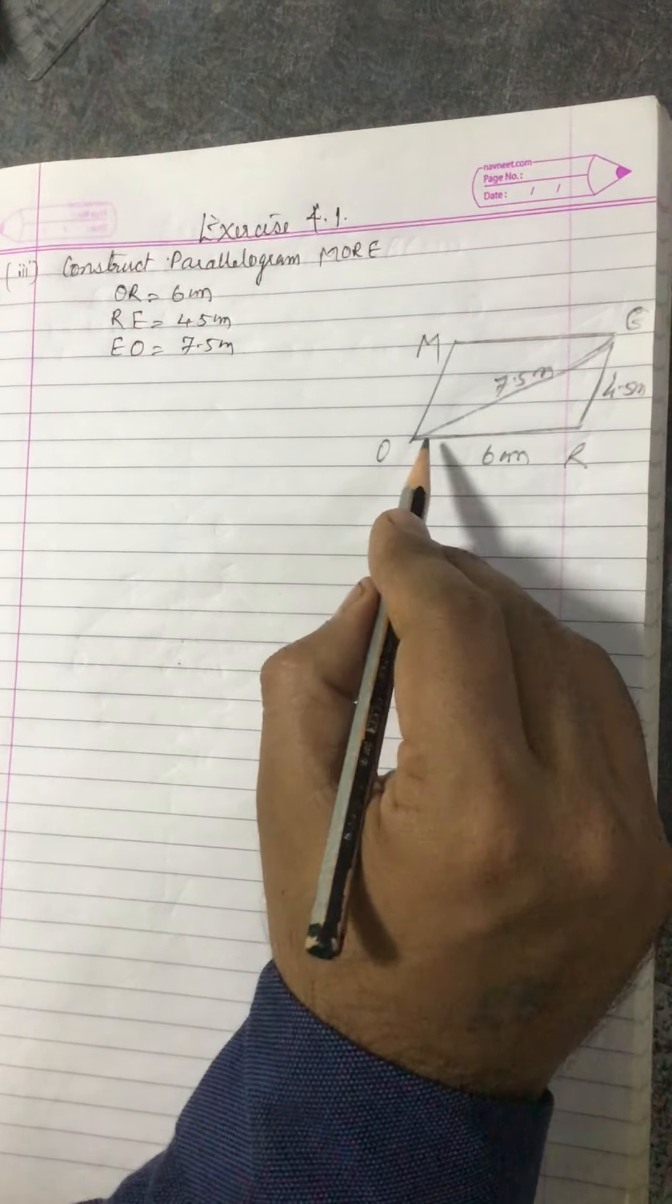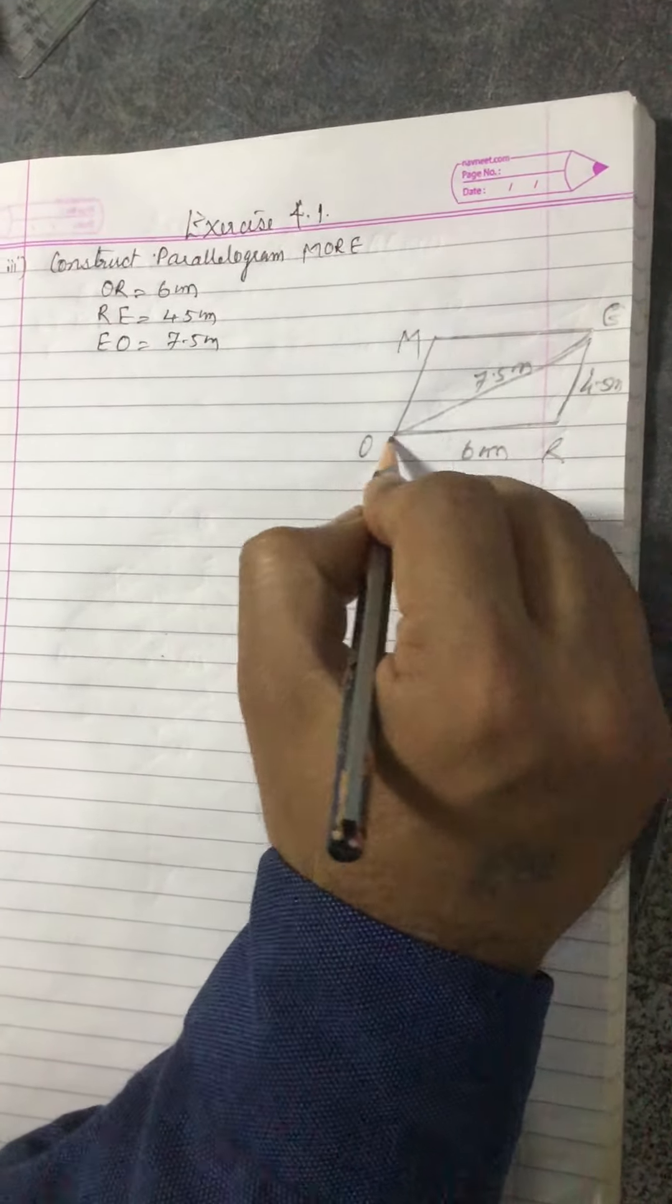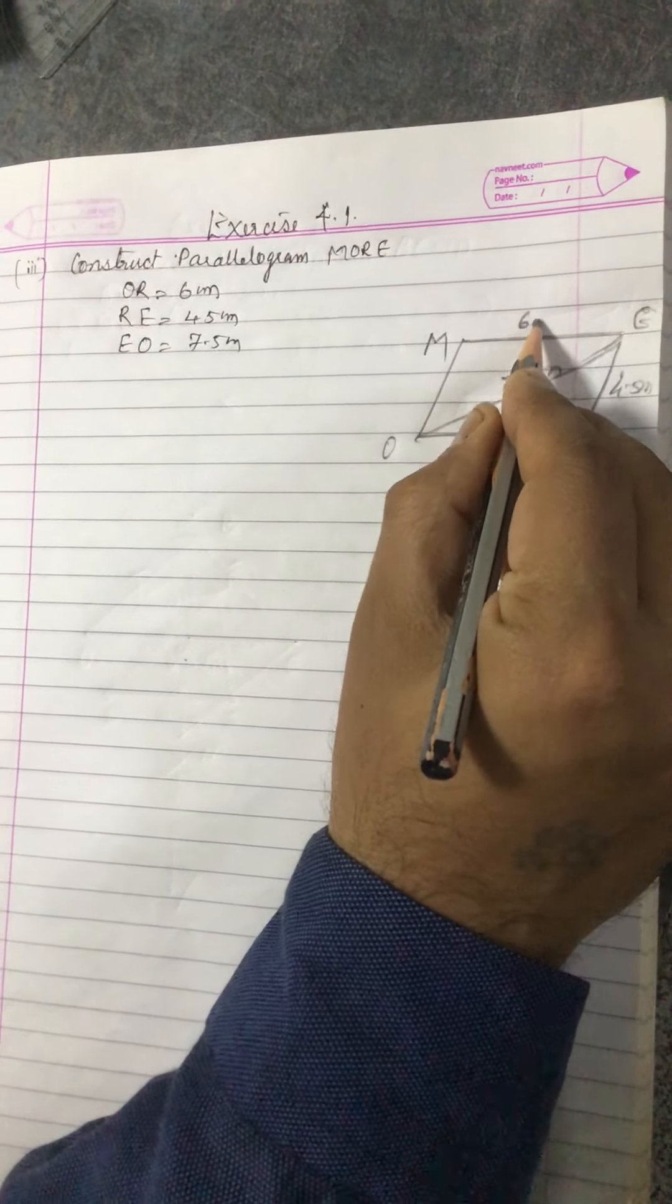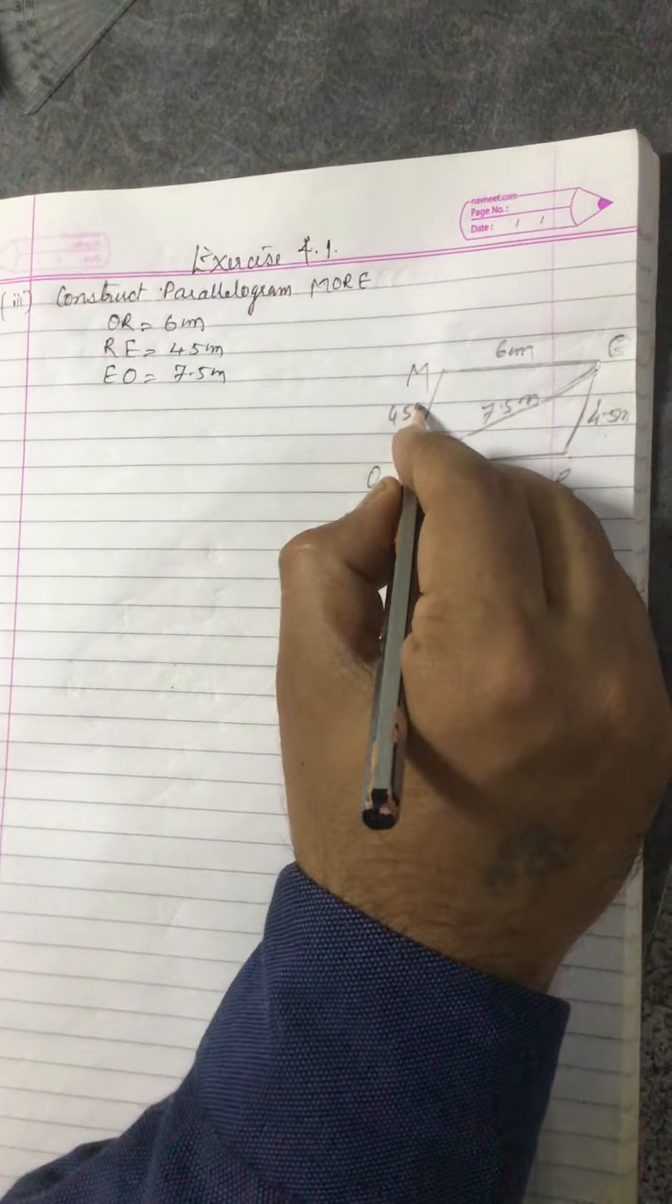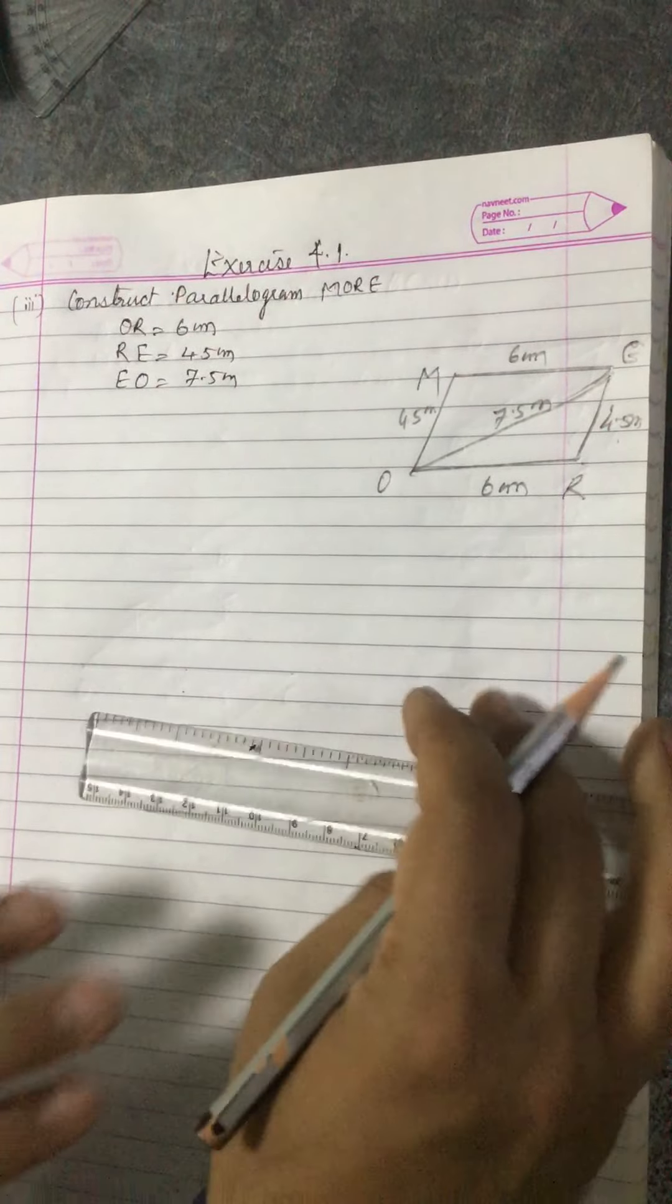You know that opposite sides of parallelogram are equal. If OR is 6, then ME will be also 6. If ER is 4.5, MO will be also 4.5. So you can easily make a parallelogram.